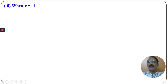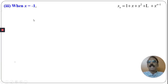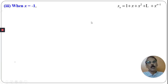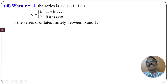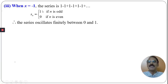Case 3: x = −1. The series becomes 1 + (−1) + (−1)² + (−1)³ + ..., which is 1 − 1 + 1 − 1 + 1 − 1 + .... The sum s_n = 1 when n is odd and 0 when n is even. Therefore the series oscillates finitely between 0 and 1 whenever x = −1.